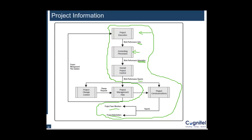Now, work performance reports might indicate that some change is required in the project. That would be taken up by the project change control process, a change request would be raised, and that particular thing would be changed in the project management plan, which would again go back to the execution team. Any updates in the project management plan need to be communicated back to the execution team — these are the changes that have been made, and you need to now execute as per the new plan. So the change in the project management plan generally comes from work performance reports or work performance information.